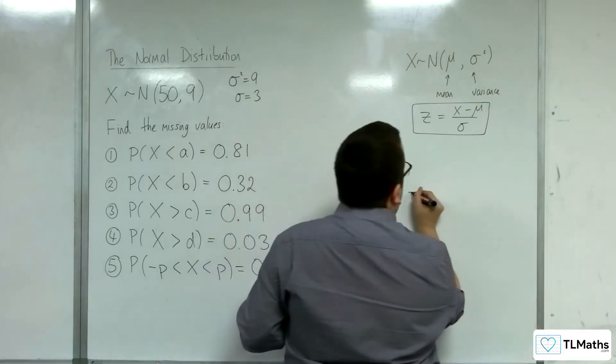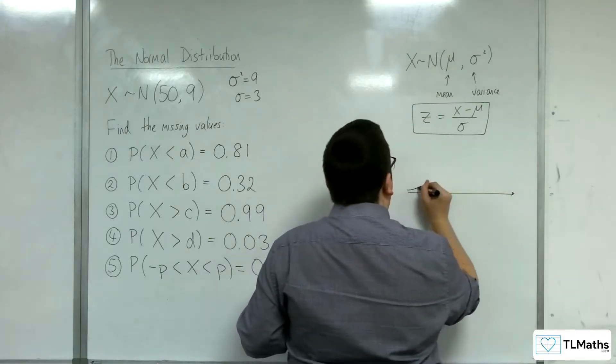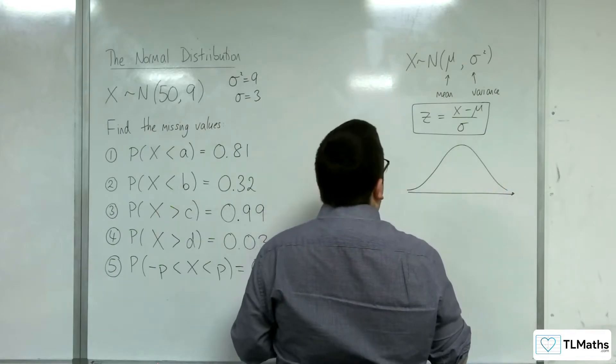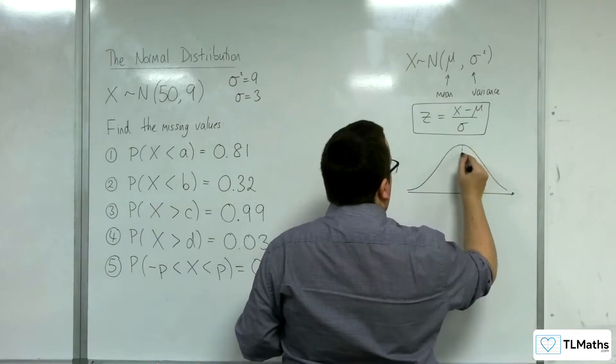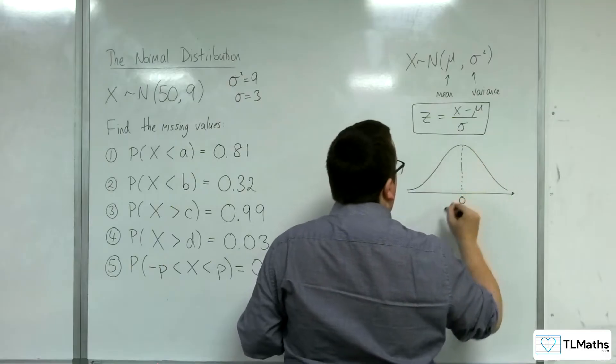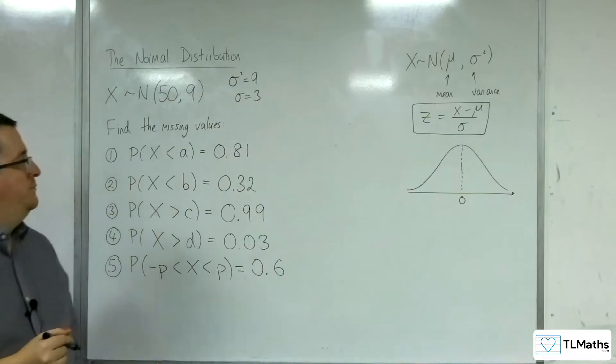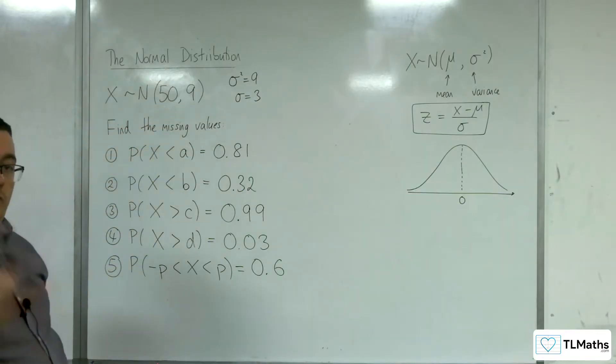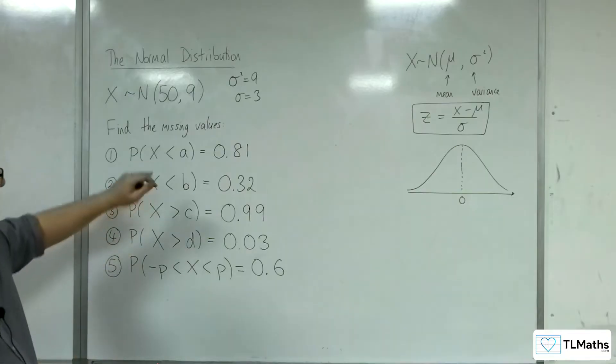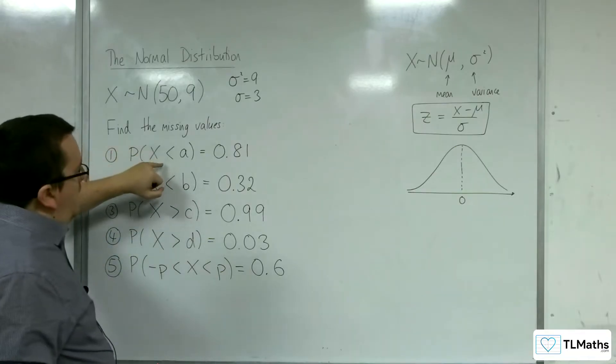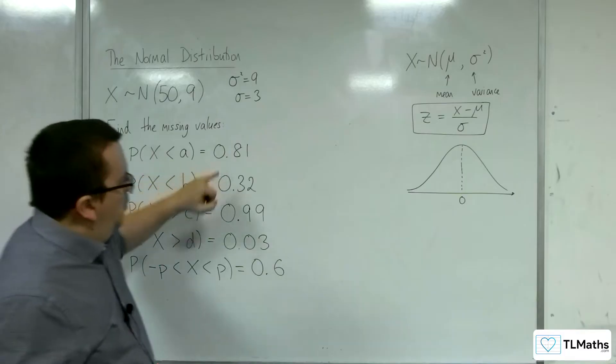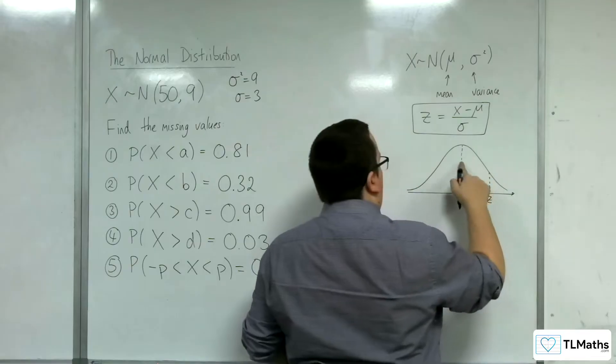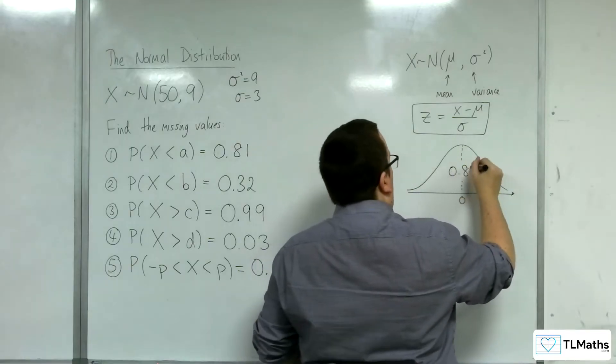So the first thing that we need to think about is finding out that value of z. So think to the standard normal distribution. So don't worry about the fact that we've got 50 and 9 here. I'm just going to go to the standard normal. So the area to the left is 0.81. So that's the value I want. And that's 0.81.